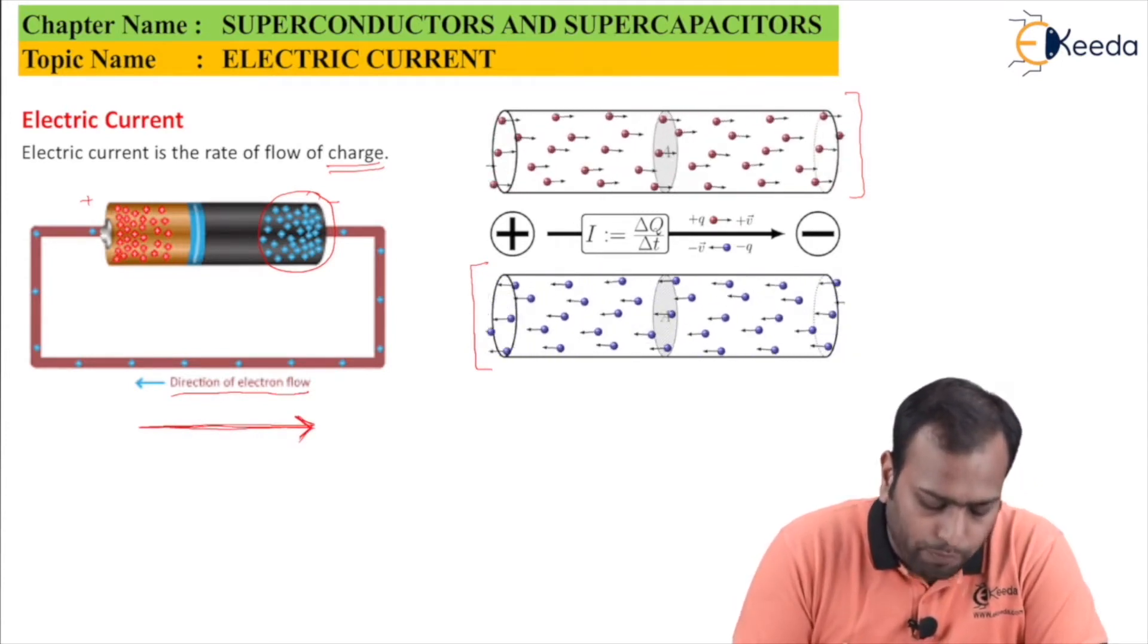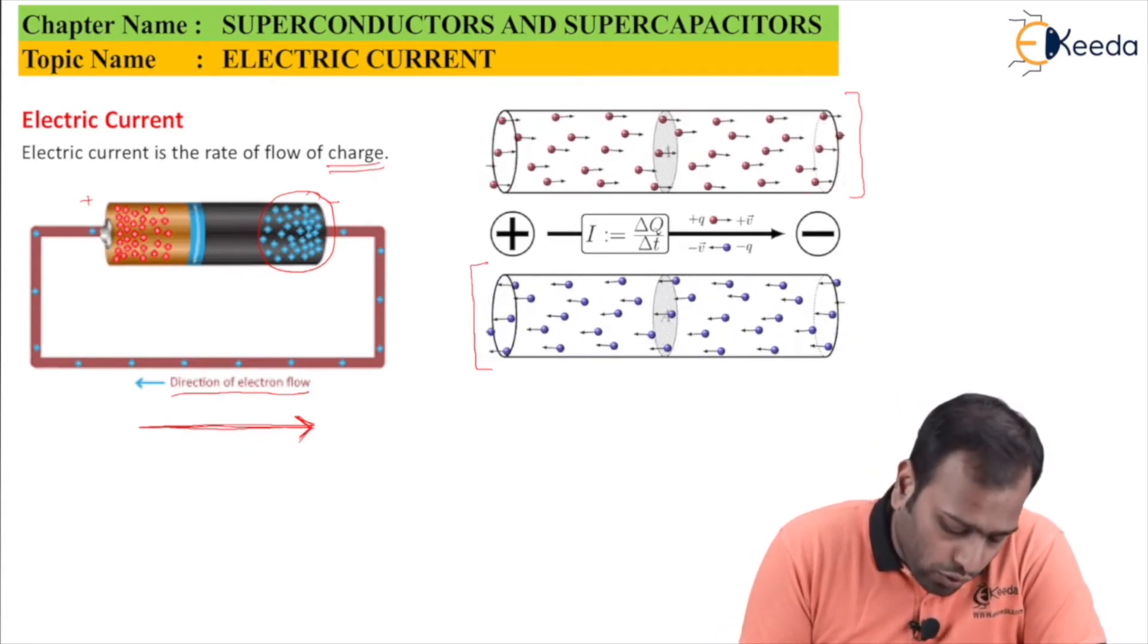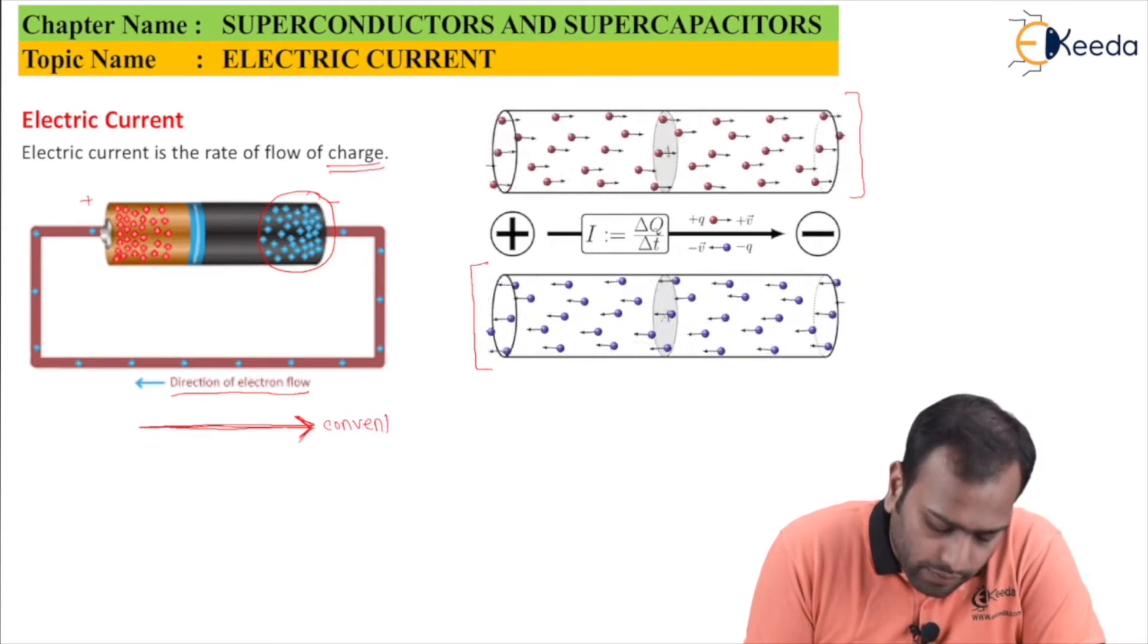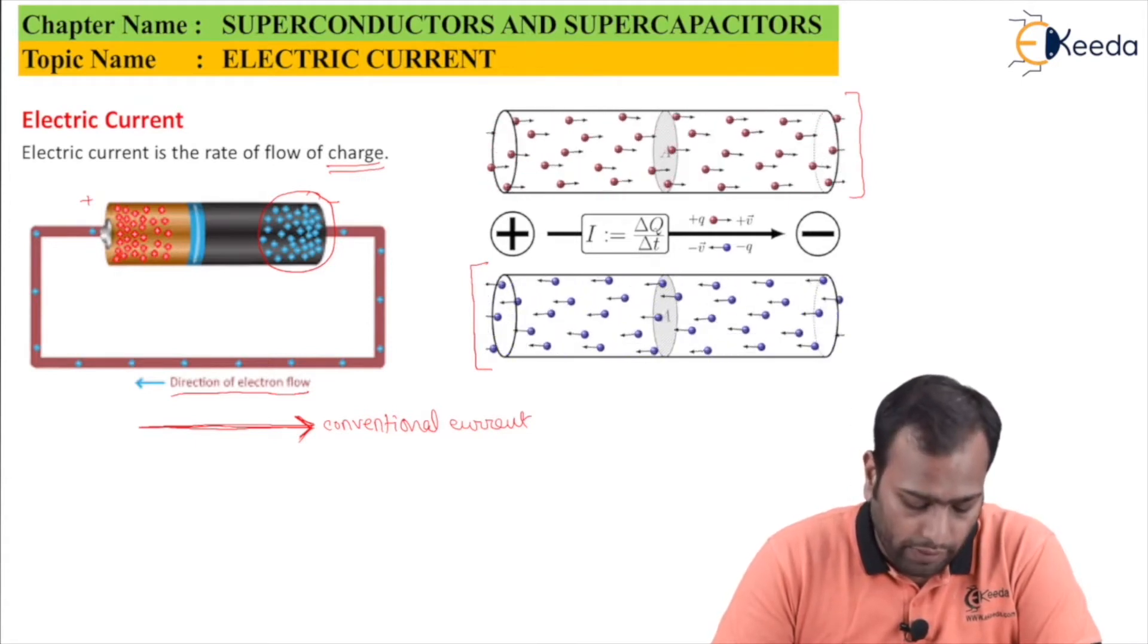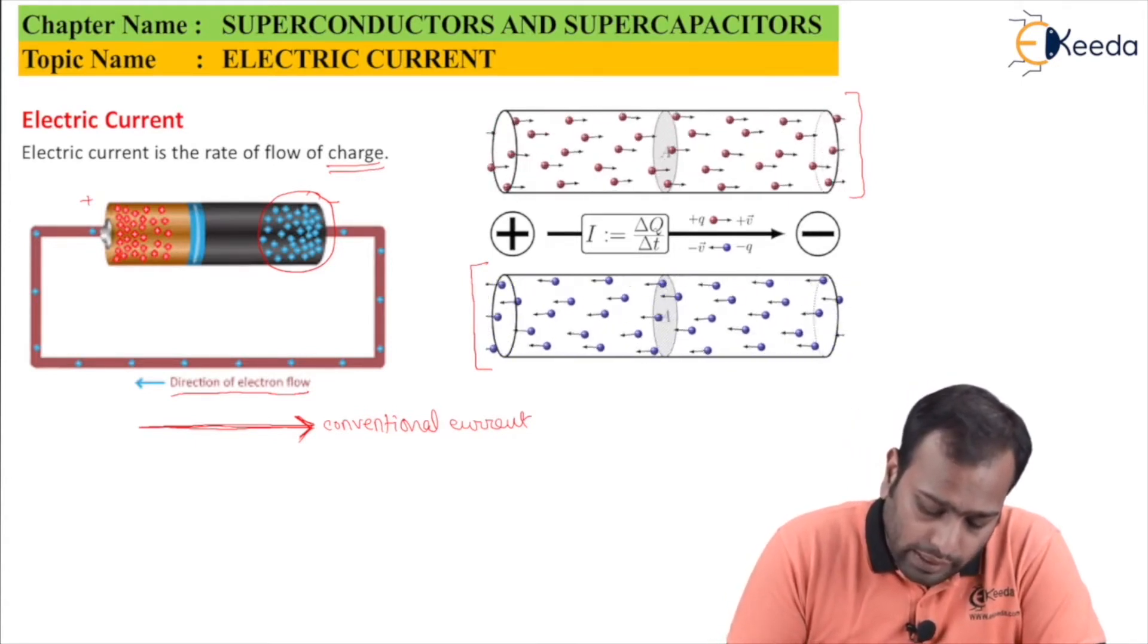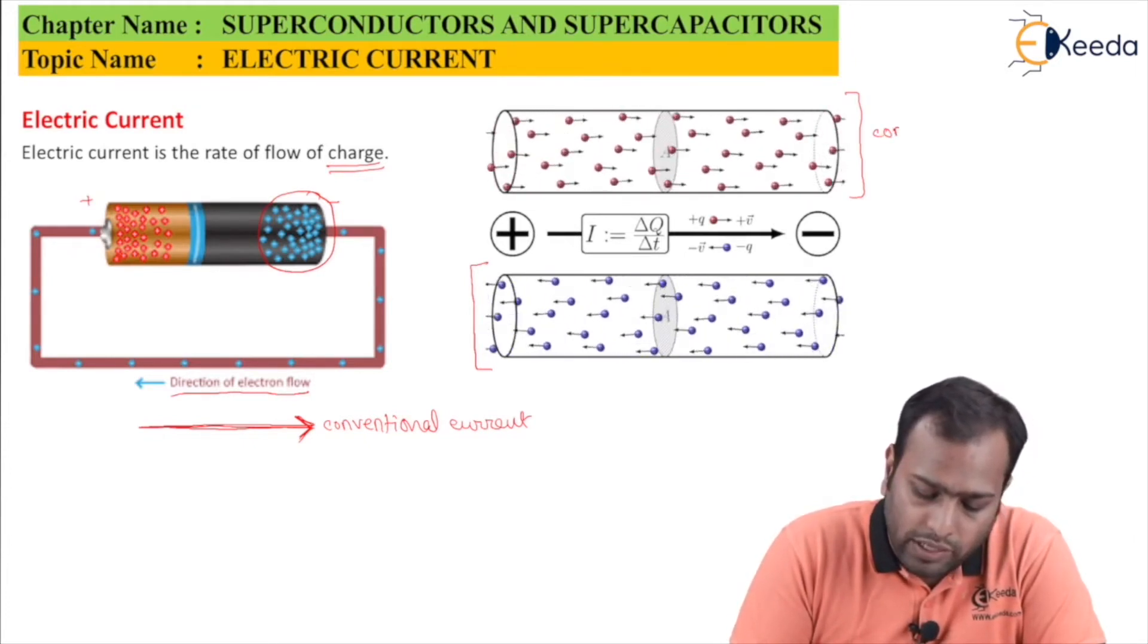This direction is called conventional current. Conventional current is the direction of the current which is opposite to the direction of the flow of electrons. As you can see, the blue color is the direction of the flow of electrons; this is conventional current.